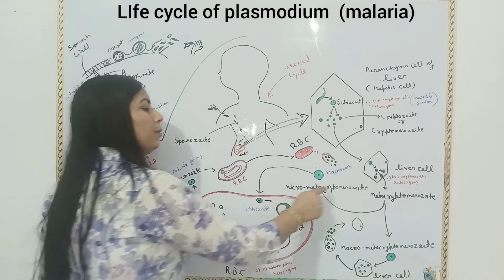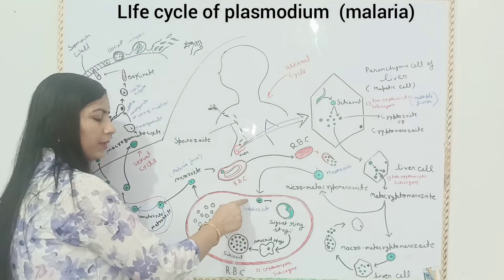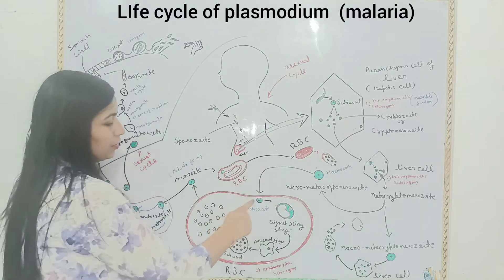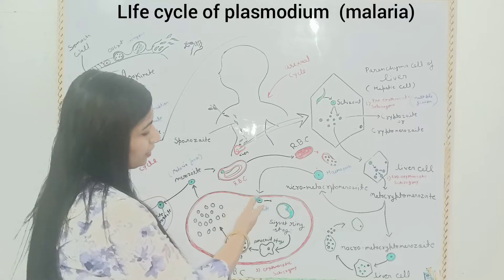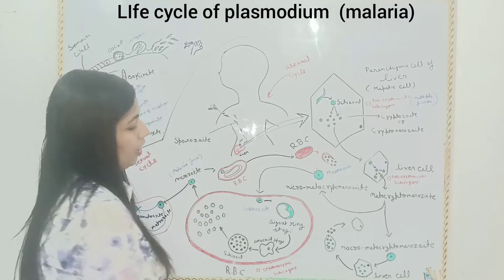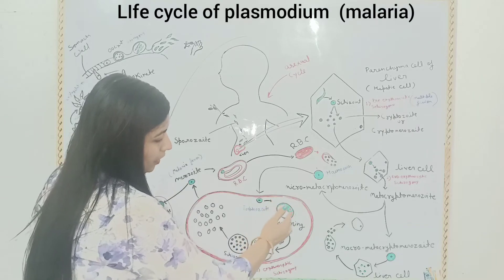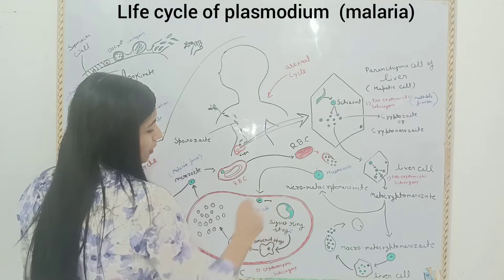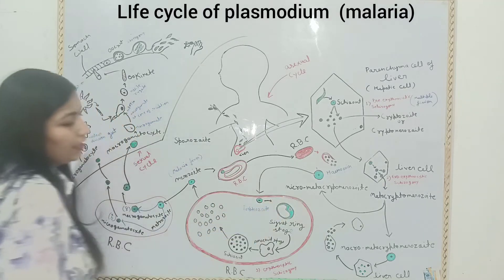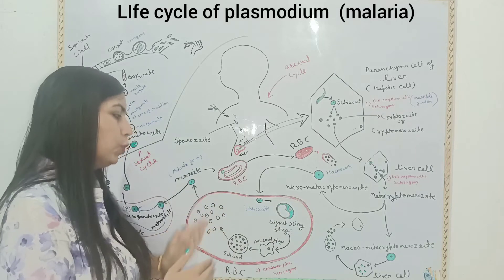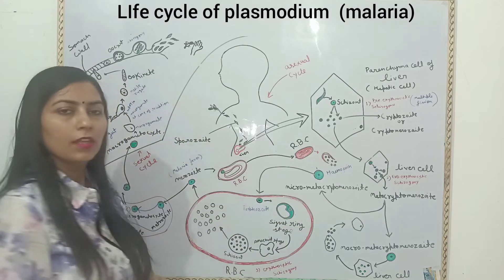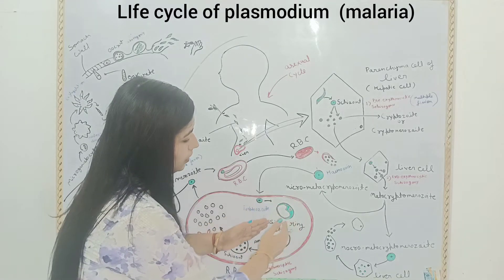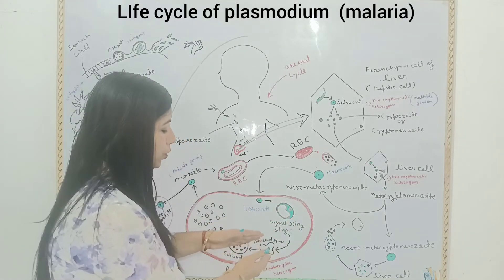Micrometacryptomerozoite enters into red blood cells. When it enters into red blood cells, this structure is known as Trophozoite. Trophozoite changes its structure and forms a big-sized vacuole. When a big-sized vacuole forms, its nucleus is pushed to the periphery. When the nucleus is pushed to the periphery, it looks like a ring, known as the Signet-ring structure.